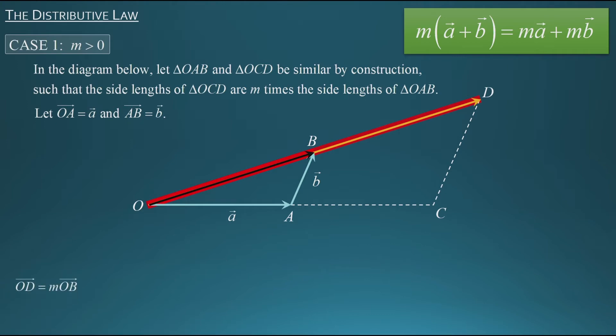Now let's take a closer look at vector OB. Notice that if I add vector A and vector B, which are tip to tail, I can use the triangle law of vector addition to get that A plus B gives me vector OB. So I can relabel that as A plus B for vector OB. Looking at the bottom of the screen, I can rewrite m times vector OB as m times vector A plus vector B.